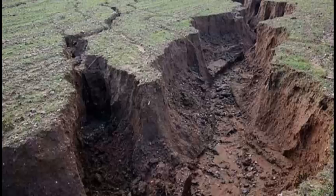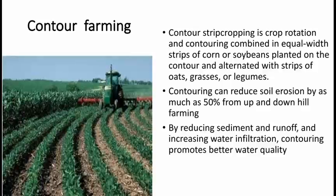Now let's see which measures can be taken to conserve the soil. Contour farming involves different practices such as strip cropping. In strip cropping, an alternate crop pattern along the contours in equal width of strips is planted — for example, maize and soya bean. The main advantage is that it reduces soil erosion by reducing the sediment and runoff, and increases water infiltration.